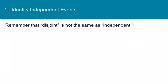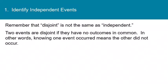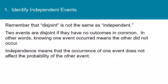A lot of people get disjoint and independent mixed up, so remember that disjoint is not the same as independent. Two events are disjoint if they have no outcomes in common — if two events are disjoint, then knowing one occurred means we know the other did not occur. Independence means that the occurrence of one event does not affect the probability of the other event. So disjoint means two things can't happen at the same time, but independent means the occurrence of one does not affect the probability of the other happening next.